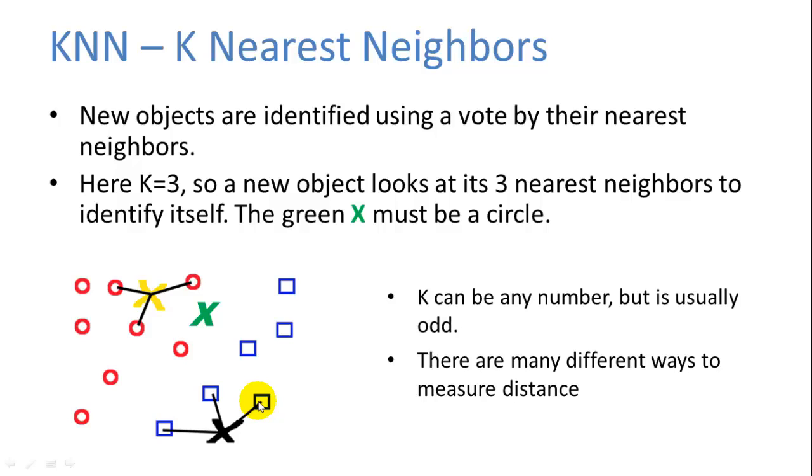So K could be one. We may only look at the one nearest neighbor. Or maybe looking at nine nearest neighbors or a hundred nearest neighbors. Typically though, the neighbors are weighted based on the distance. We look at an inverse distance from our new object X. So the farther away a neighbor is, the less vote or the less influence it has in determining what X is. And in this case, the green X, we can see that there are two near neighbors that are red. But then the other nearest neighbor is blue. So in this case, we would conclude that X is probably a red circle. So that is, in a nutshell, how K nearest neighbors works.